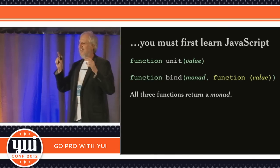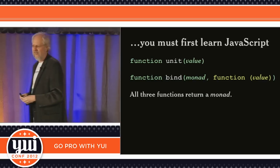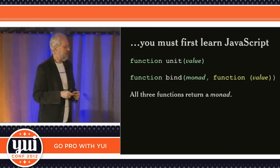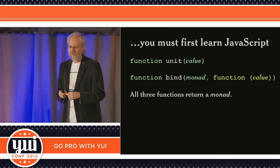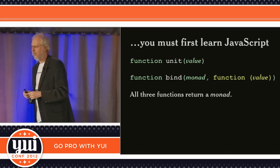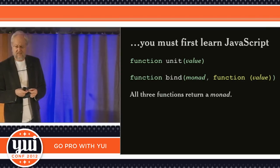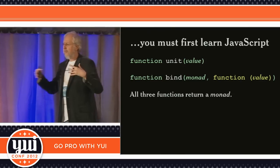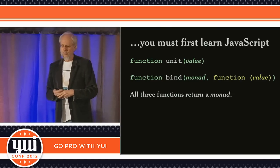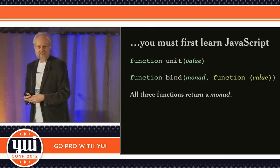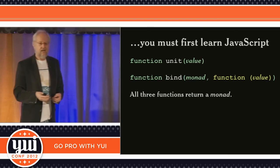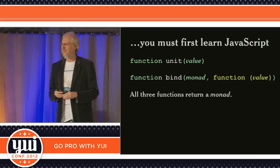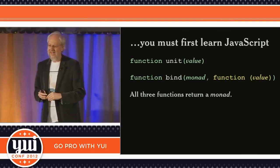It turns out the ideal language for doing this stuff is JavaScript. So here we go — let's look at our first code. This is a tale of three functions: the unit function, the bind function, and another function that is the argument of the bind function. All three of these functions return monads. And that's it. That's the whole thing. Except I didn't tell you what a monad is — a monad is an object.